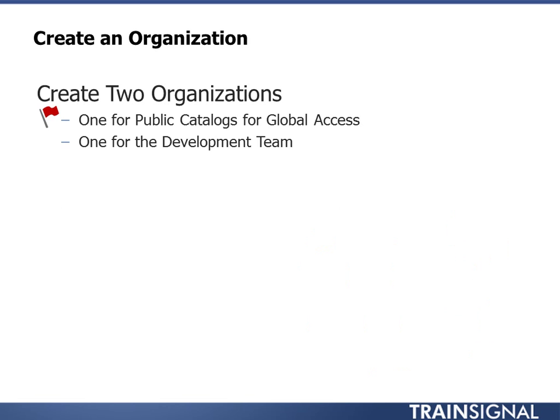For this lesson, we'll create two organizations. The first — already made — is a public catalog organization, a common pattern in vCloud Director environments. Within any cloud, private or public, you want a service catalog everyone can use: basic templates like Windows Server 2008 R2, Server 2003, or Linux distributions — generic virtual machines everyone has access to. You make an organization called 'Public Catalog' and place global vApps in it that everyone can consume.